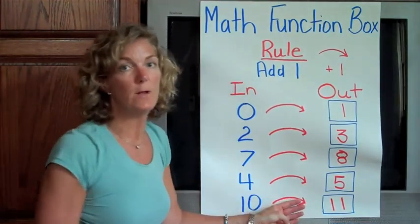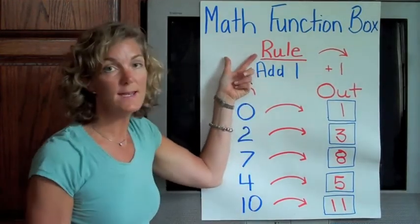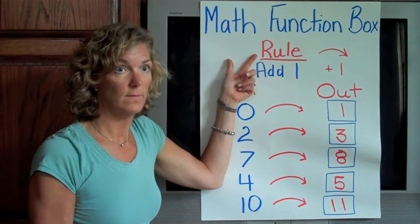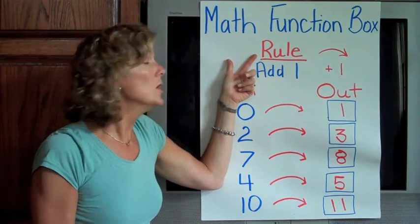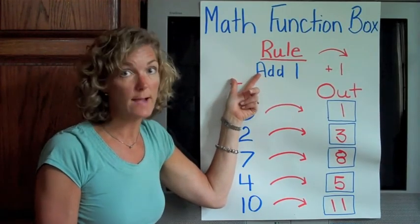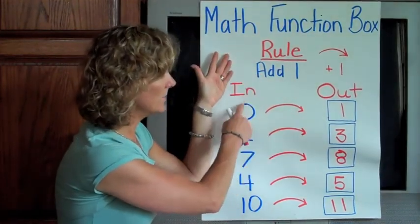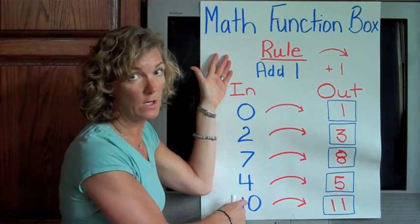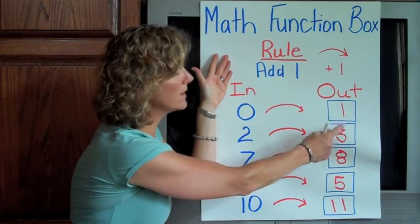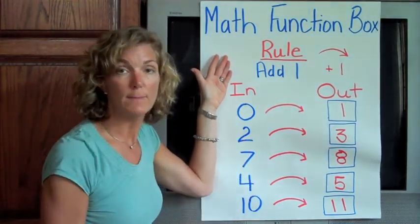This is very simple and basic. This rule can change depending on the type of problem that you have. And as you get older and out of kindergarten, you will see that this add 1 could be to subtract numbers. They might even try and trick you and instead of giving you the in number, maybe give you an out number, so you knew what came out and you have to go backwards and figure out what came in.